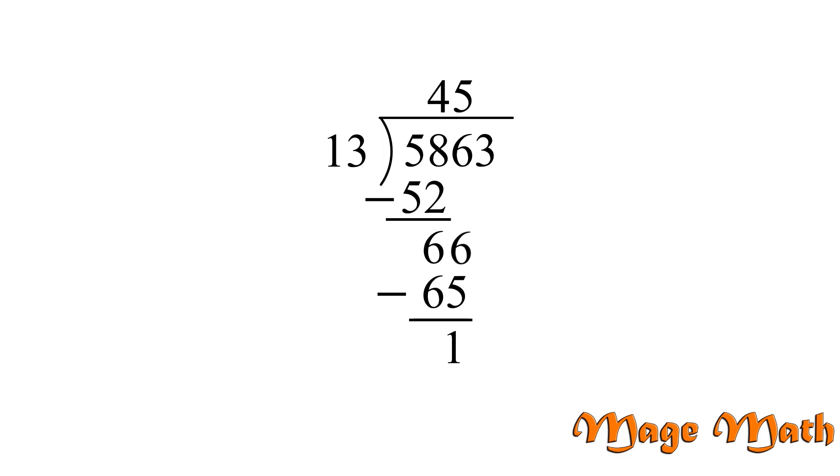Bring down the next digit, 3. And we'll ask ourselves, how many times does 13 go into 13? Well, just one time. 1 times 13 is 13, so then we will subtract. 13 minus 13 is 0. Nice work!